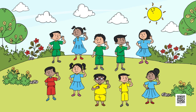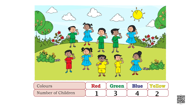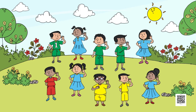Look at the picture and see — only one child is wearing red color. So you have to write in the table: number of children wearing red color is one, number of children wearing green color is three, blue color is four, and yellow color is two.